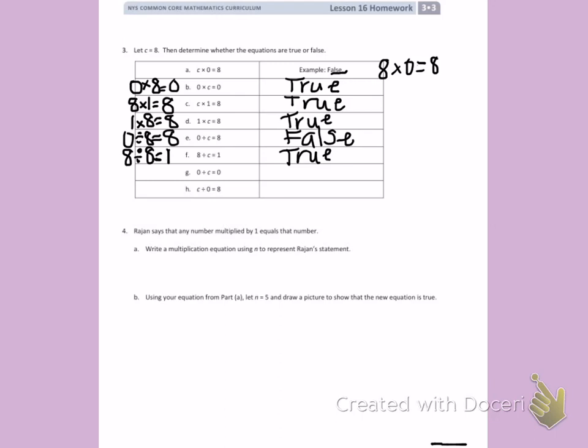G, 0 divided by 6 equals 0. So we have 0 divided by C, divided by 8 equals 0. Any number divided by 0 equals 0. This is true.